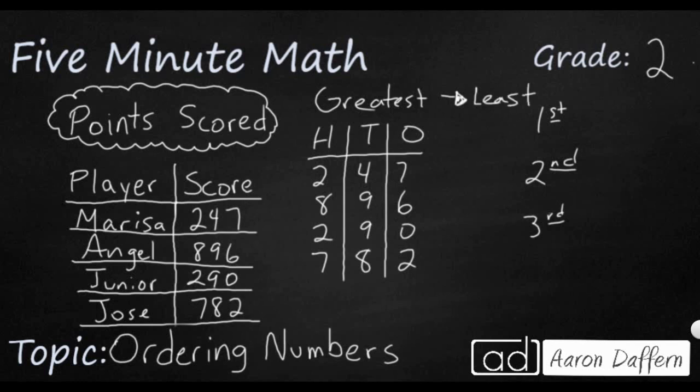So looking at the hundreds place here, we have a 2, an 8, a 2, and a 7. And once we get one of these numbers that jumps out as the biggest, it doesn't really matter what the rest of the numbers are. And as you can see, this 8 is going to be our biggest number. It doesn't matter if the numbers behind it are zeros or nines. 800 is always going to be larger than 700 or 200. So I'm going to put a line through there. We need to match up 896. That's Angel. So I'm going to write Angel right here. Angel is in first place.